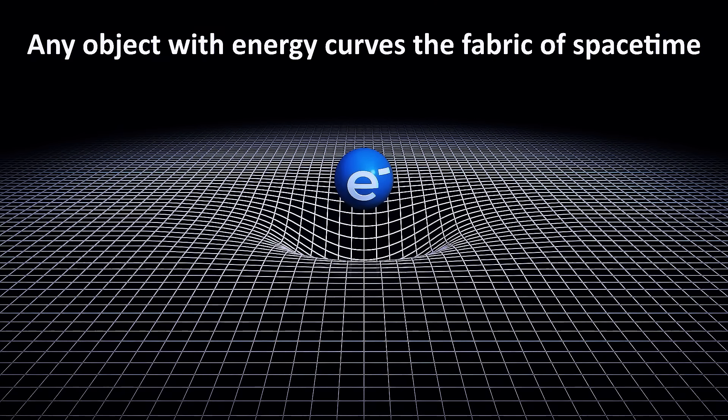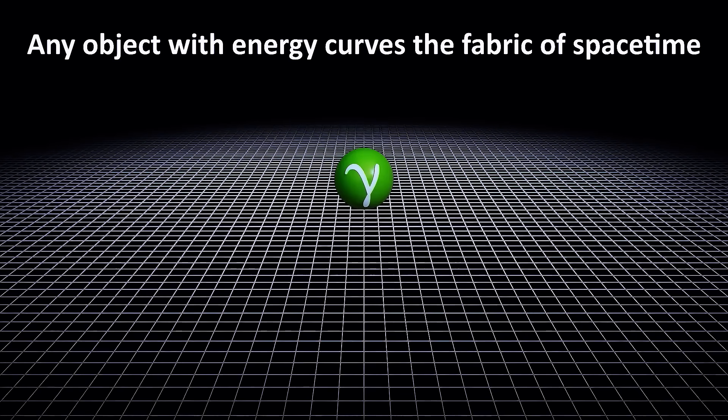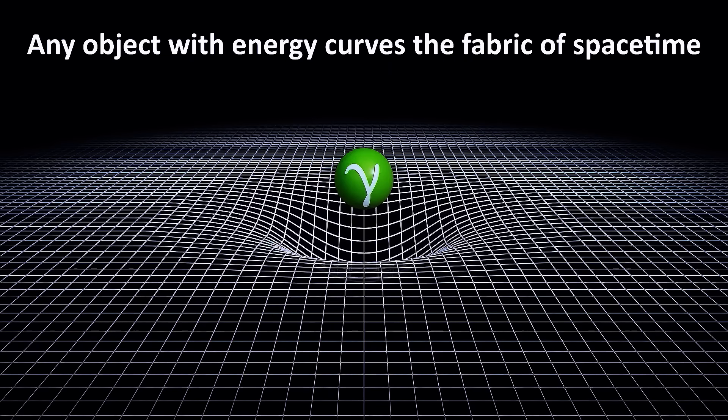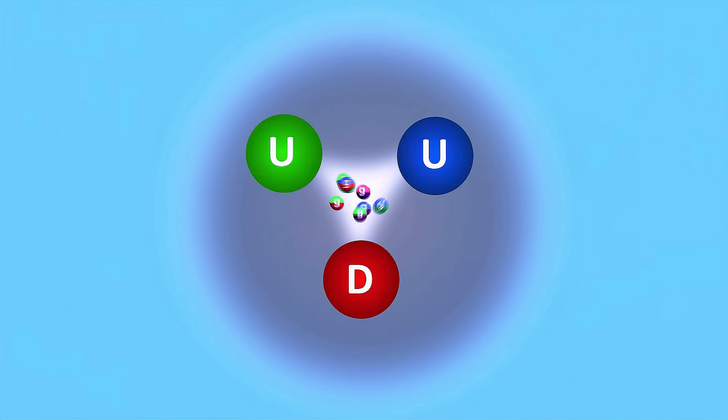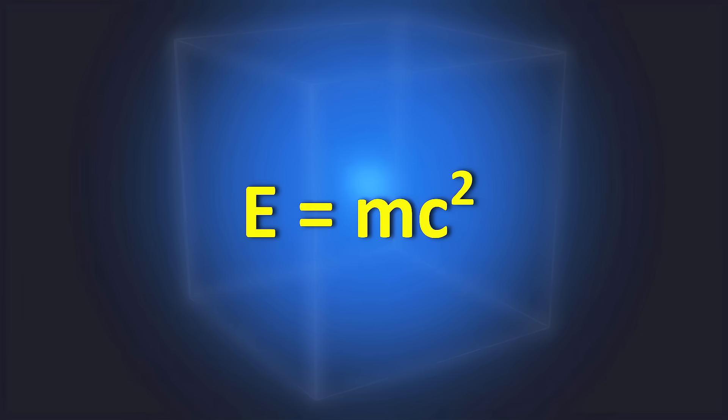According to the theory of general relativity, any object with energy has the ability to curve the fabric of space-time. This curvature is what creates gravity. And at the very core, atoms contain a tremendous amount of energy, concentrated in the strong interaction between quarks inside nuclei. Einstein's equation, E equals mc squared, reminds us that this energy from the strong force gives rise to the rest mass of atoms and to the gravitational force we observe.